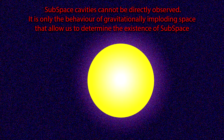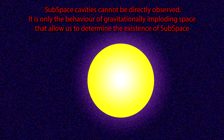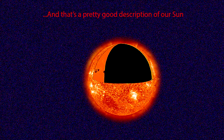Subspace cavities cannot be directly observed. It is only by virtue of the gravitational implosion of space and the consequent energy that is emitted that allow us to determine the existence of subspace. This implosion has a violence equal to the initial creation of subspace, so we're talking E equals MC² annihilation events here.